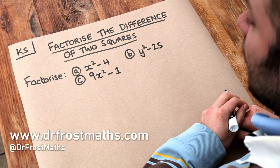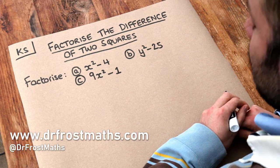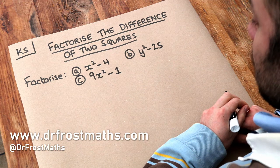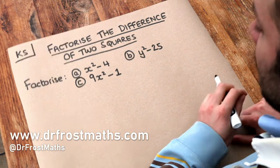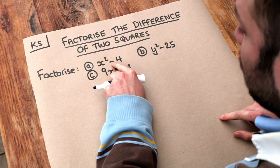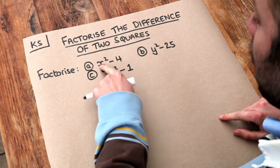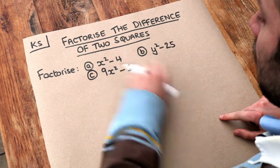Hello and welcome to this Dr. Ross-Mass key skill video on factorising the difference of two squares. We have the difference of two squares when we have a subtraction of two things, and both of those things are squared.